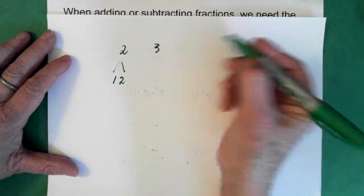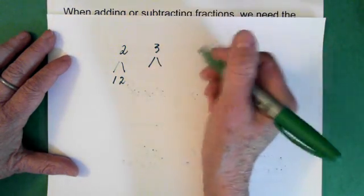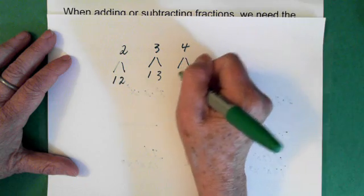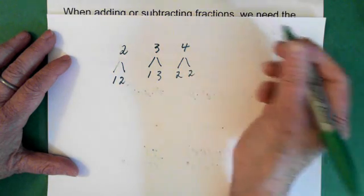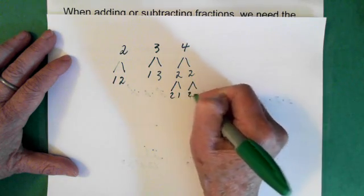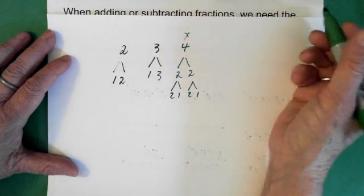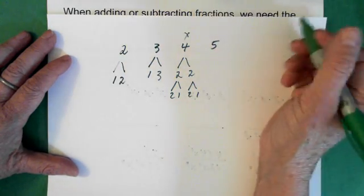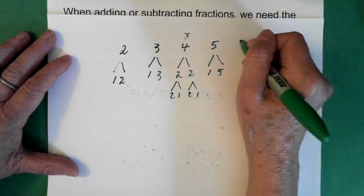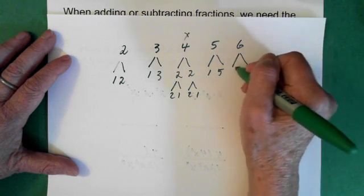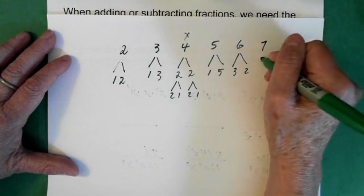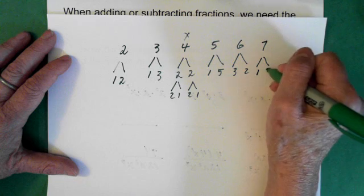3 is a prime number because the only factors of 3 are 1 and 3. 4 is not a prime number because 2 times 2 will give us 4, and we can factor this as 2 and 1 and 2 and 1, so this is not a prime number. 5 is a prime number because 1 times 5 will give us 5. 6 is not a prime number because 3 times 2 will give us 6. 7 is a prime number because the factors of 7 are 1 and 7.